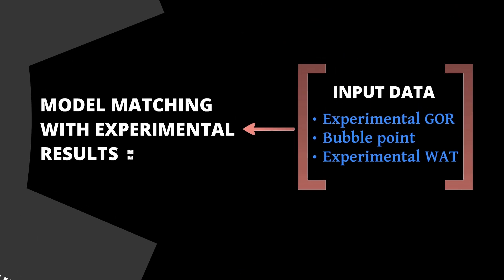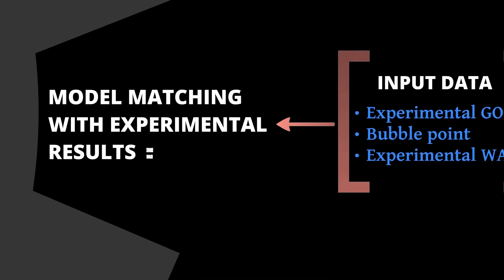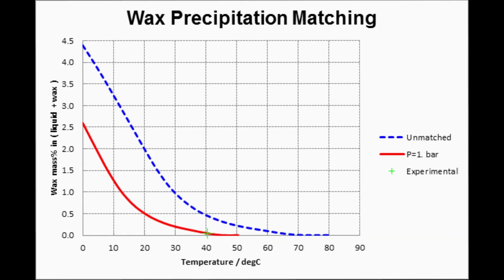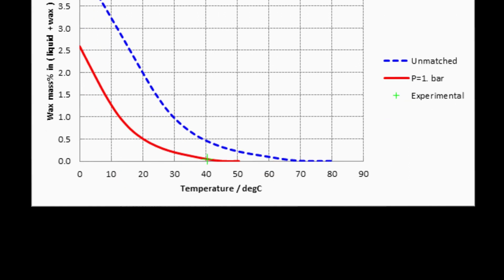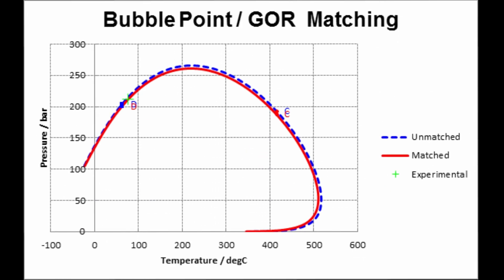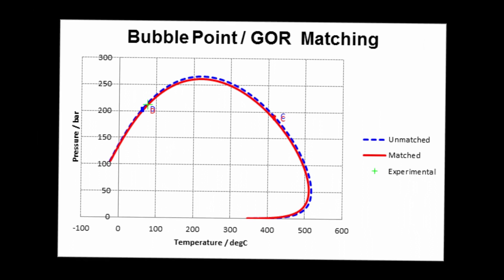From this first prediction, simulation results are compared to the experimental measurements. On this chart, the green cross is the experimental WAT, and the blue curve is the initial prediction of the wax deposition. The software enables to tune easily the model to match the experimental results, as illustrated on the red curve. On this example, the red curve is the phase envelope after adjusting the model to the experimental bubble point measurement. More experimental data added to fit the model means better accuracy.